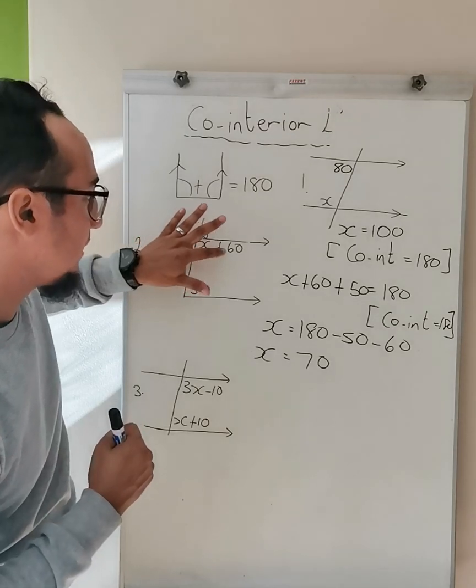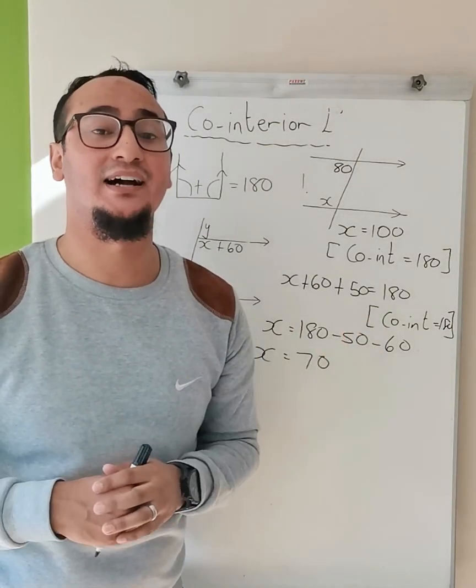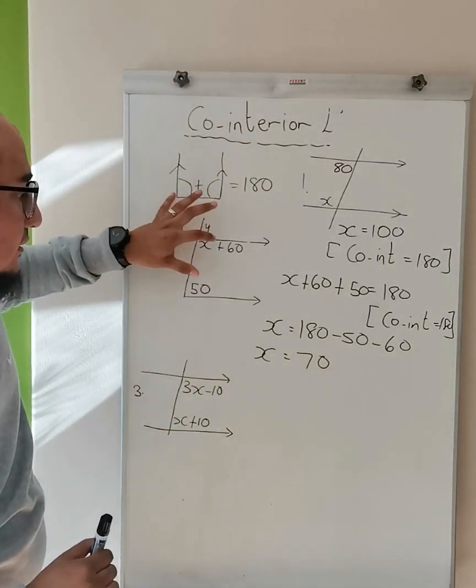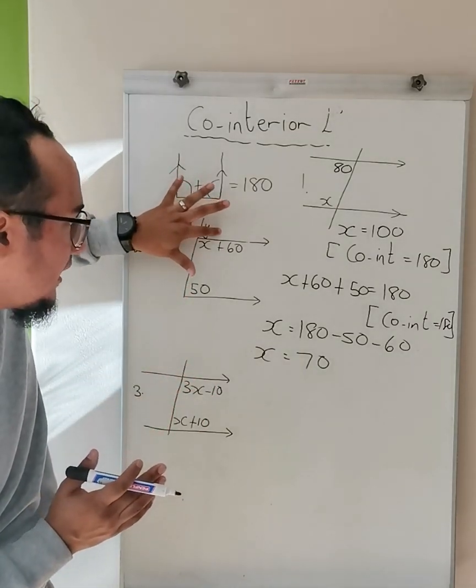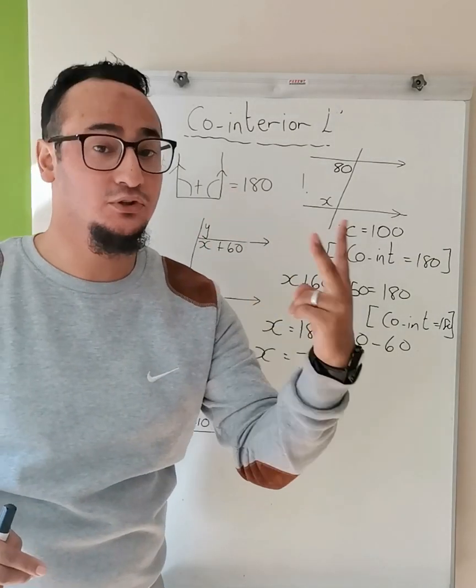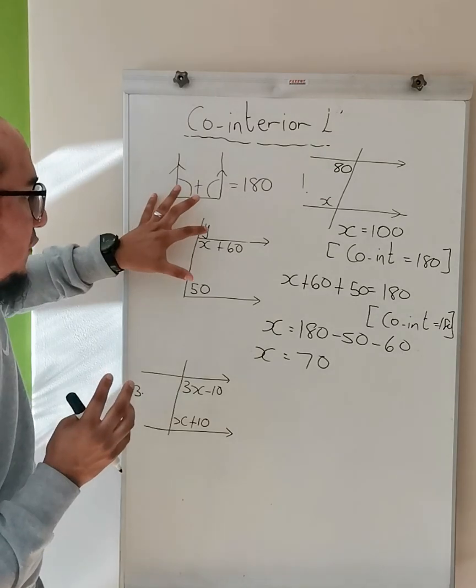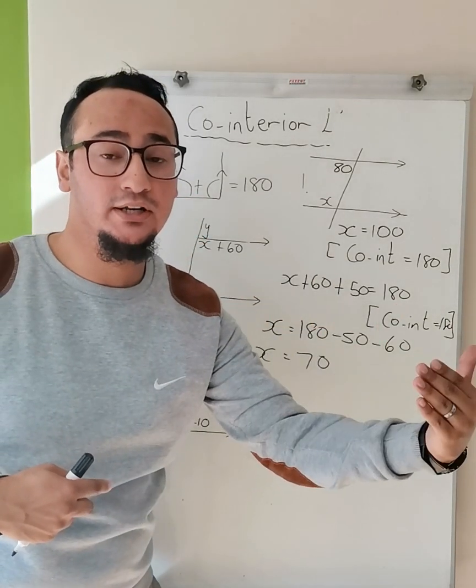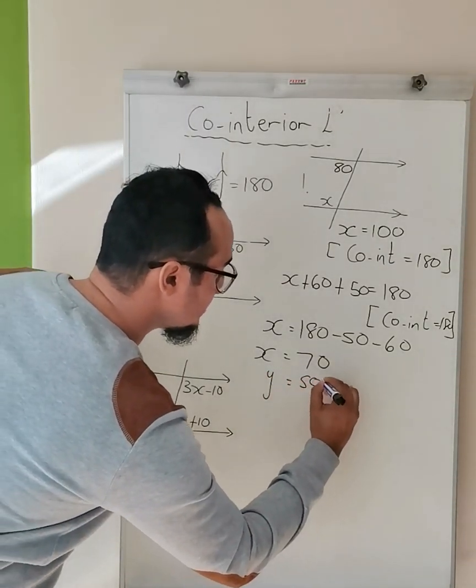Now let's solve for y. What can you tell me about y? It lies on top of my parallel line. This 50 lies on top of my parallel line. There are two ways to do it. If I go back to last week, I'll know that y and 50 are corresponding to one another. So therefore, you can say y is equal to 50 degrees—corresponding angles.